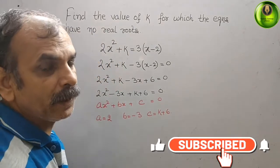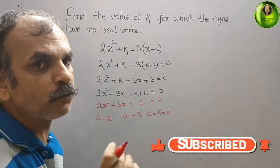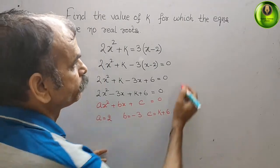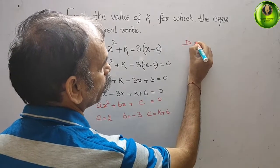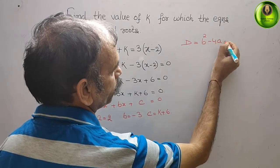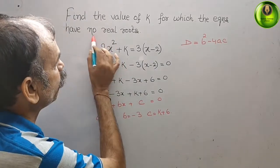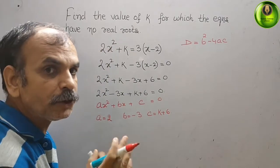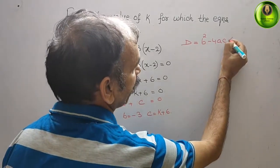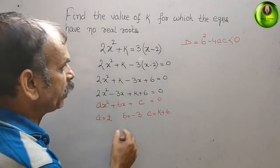Now we'll write the discriminant, which is b² - 4ac. But they have given no real roots, that means it should be less than 0.